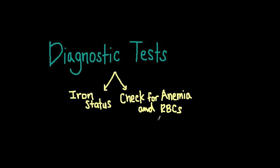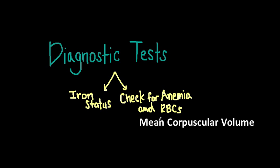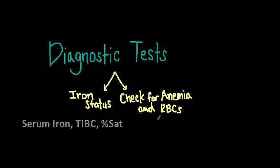Red blood cell indices are also important. For example, mean corpuscular volume (MCV) indicates the average size of red blood cells. In iron deficiency, the MCV is smaller than normal because you don't have enough starting material to make red blood cells — we call this microcytic. Other tests to determine iron status include serum iron, to measure how much iron is in the blood; total iron binding capacity, which measures transferrin molecules — the protein that transports iron in the blood. With iron deficiency, total iron binding capacity increases as iron stores become more depleted. Percent saturation of transferrin is normally 33%, but with iron deficiency anemia it decreases because there is less iron occupying the binding sites.